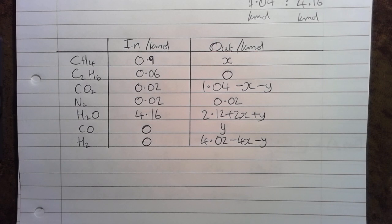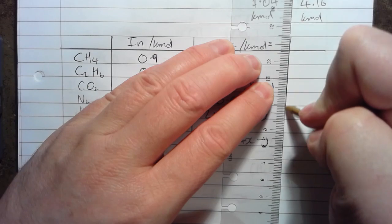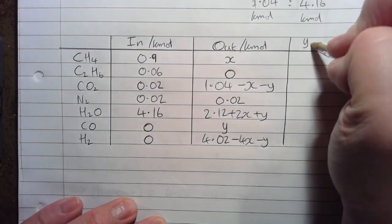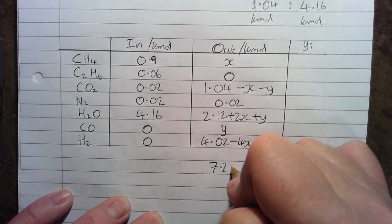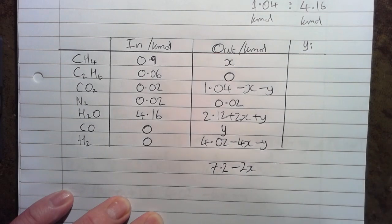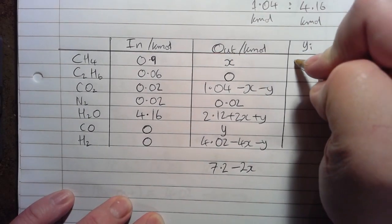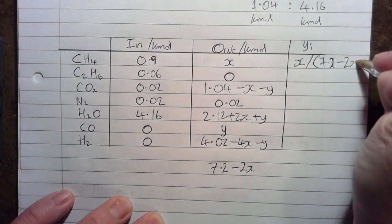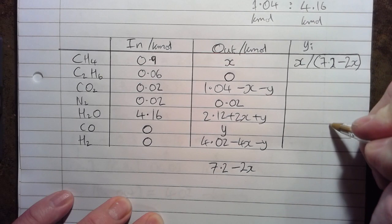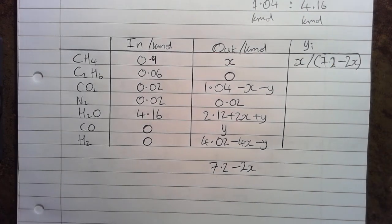This is building up to the next step where we'll look at the equilibrium constant. In order to work out what's going on with the equilibria, we need to calculate the mole fraction of each component in the gas phase — that's yᵢ. The total moles across all components is 7.2 minus 2x, so the mole fraction is simply the kmol of each component divided by 7.2 minus 2x. We'll carry that process on for all components, which will be important for the next stage covered in the next video.